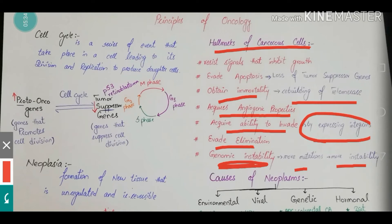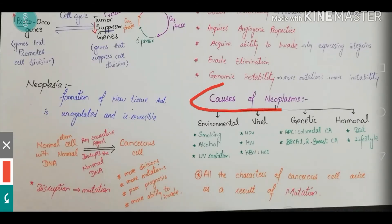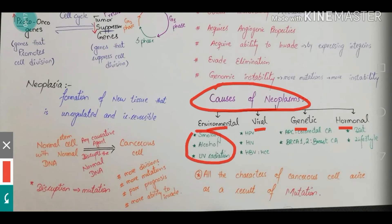Carcinoma can be caused by a number of causes, including environmental, viral, genetic, hormonal, and many more. In environmental factors, smoking, alcohol, and UV radiation are at the top of the list. Viral causes include human papillomavirus, HIV, and hepatitis B virus, which is notorious for causing hepatocellular carcinoma. Regarding genetic factors, the APC gene is responsible for colorectal carcinoma, and BRCA1 and BRCA2 mutations are responsible for breast carcinoma.